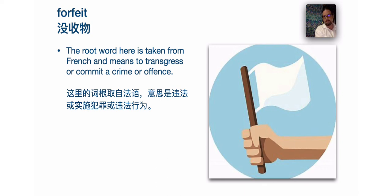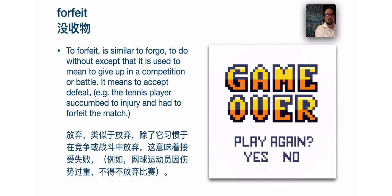Forfeit. The root word here is taken from French and its meaning is to transgress or commit a crime or offense. Forfeit, adding the prefix, is similar to forgo — to do without — except that it is used to mean to give up in a competition or battle. It means to accept defeat, to forfeit. For example: the tennis player succumbed to injury and had to forfeit the match.